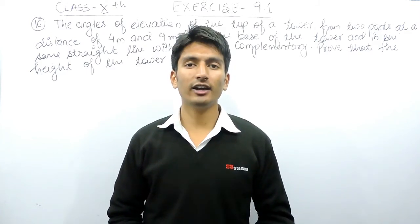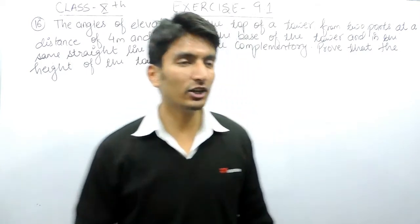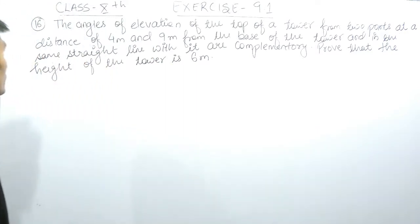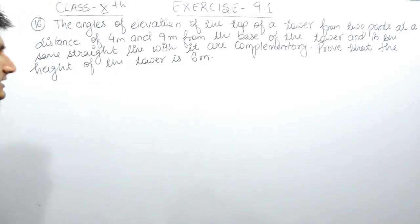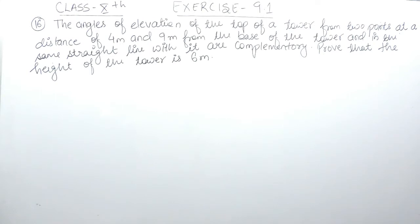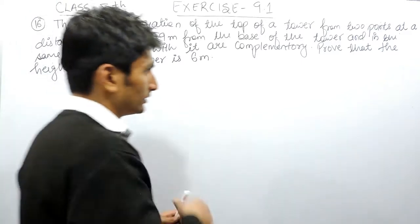Hello everyone, we are from True Maths and in this video we are going to solve question number 16 of Exercise 9.1. The question says: the angle of elevation of the top of a tower from two points at a distance of 4 meters and 9 meters from the base of the tower, and in the same straight line with it, are complementary. You have to prove that the height of the tower is 6 meters.